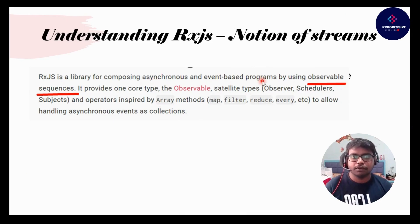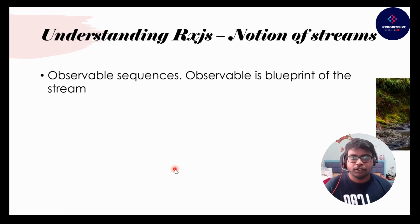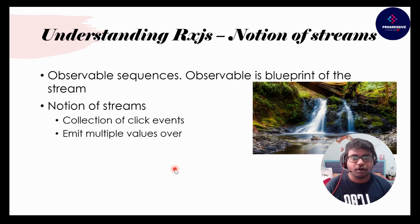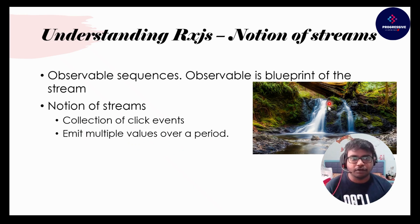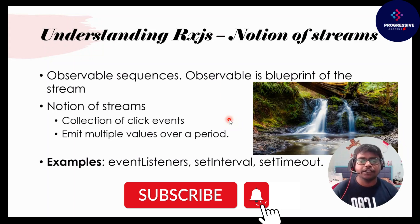Now that you understand asynchronous and event-based programming, let's look at observable sequences. An observable is a blueprint of a stream. You might ask: what is a stream? A stream is a collection of multiple values over a period of time. In our examples, event listeners, setInterval, and setTimeout all represent the notion of streams — they continuously emit some value over a period of time. If you like the effort I'm putting into making this content simpler, please hit the subscribe button and the bell icon to get new videos in your feed.